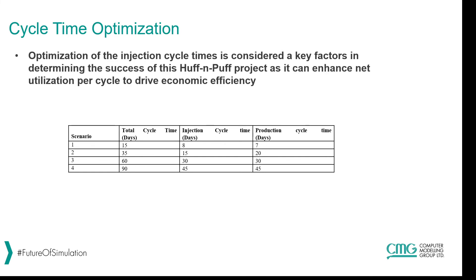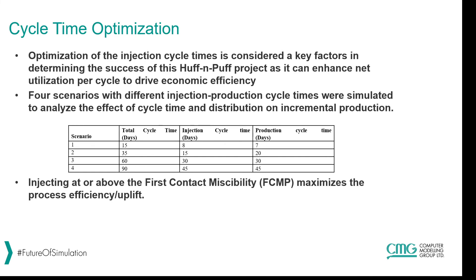The optimization of injection cycle times is a key factor in determining the success of the Huff and Puff project, as it enhances net utilization per cycle and drives economic efficiency. Four scenarios with different injection-production cycle times were tested: a 15-day cycle (8 days injection, 7 days production), a 35-day cycle (15 days injection, 20 days production), a 60-day cycle (30/30 split), and a 90-day cycle (45/45 split). All cases were injected at or above first-contact miscibility pressure.